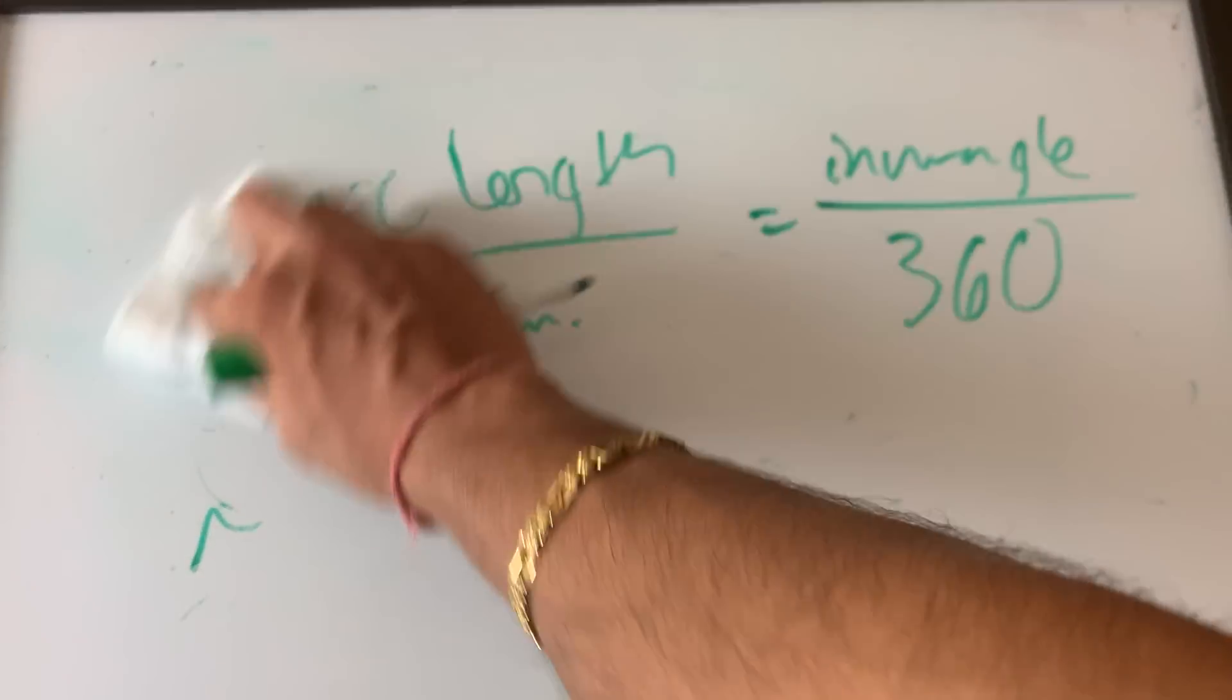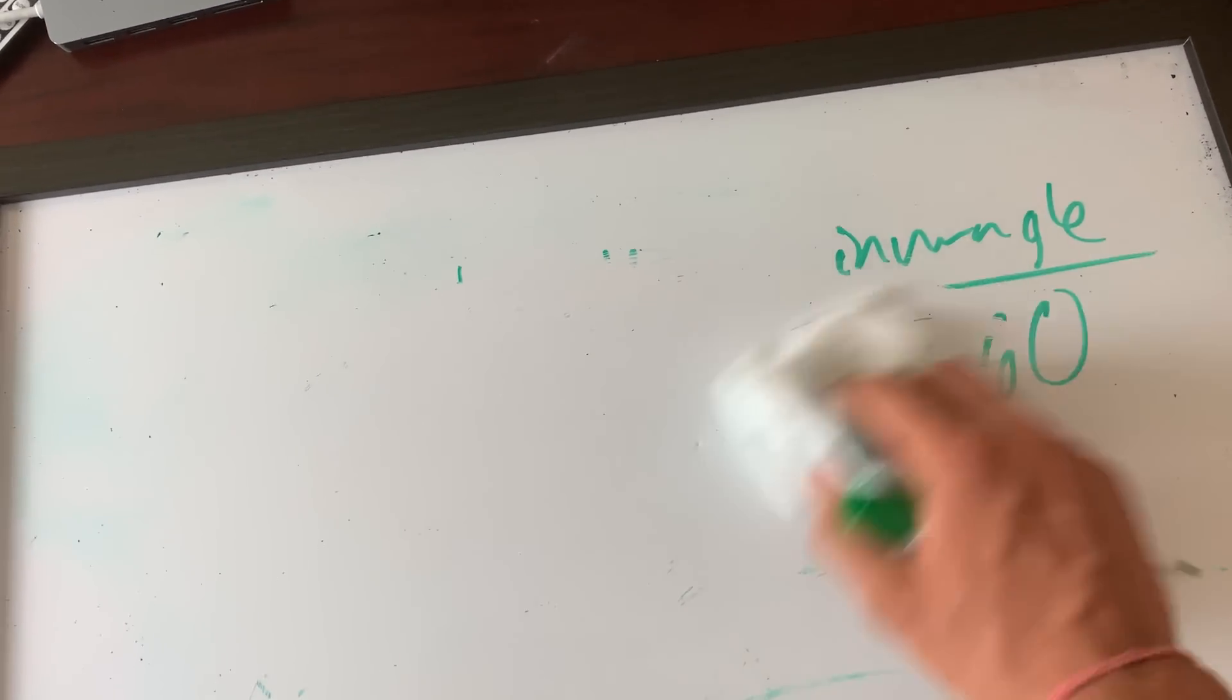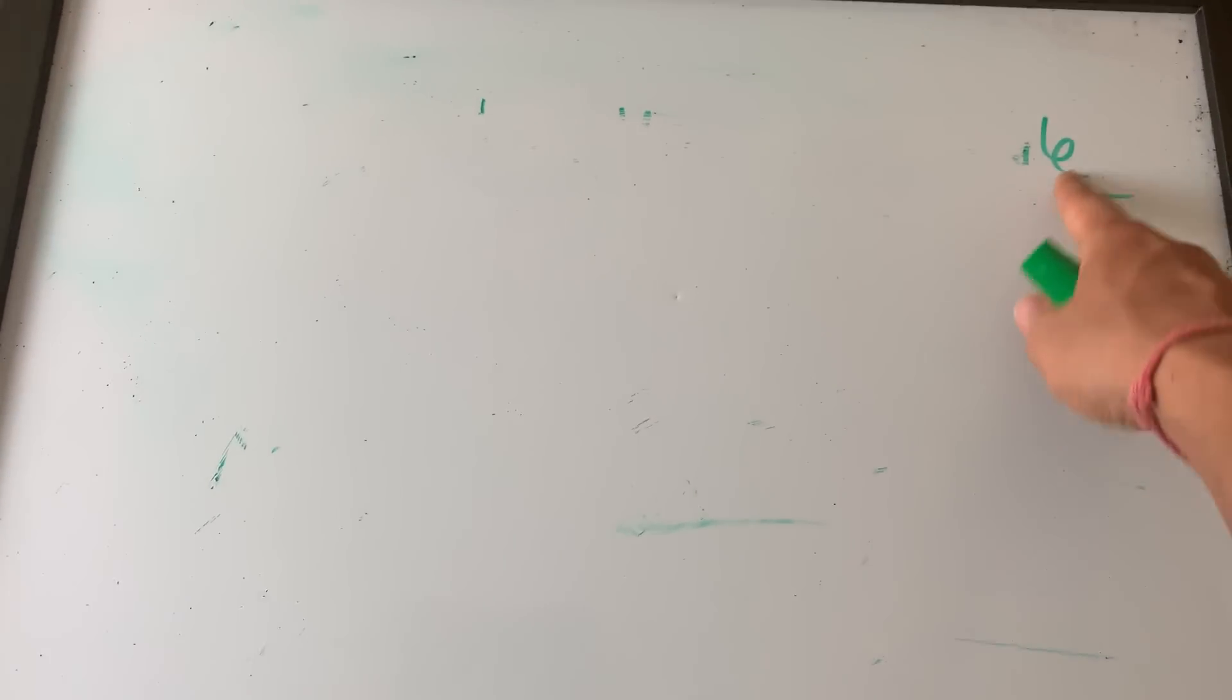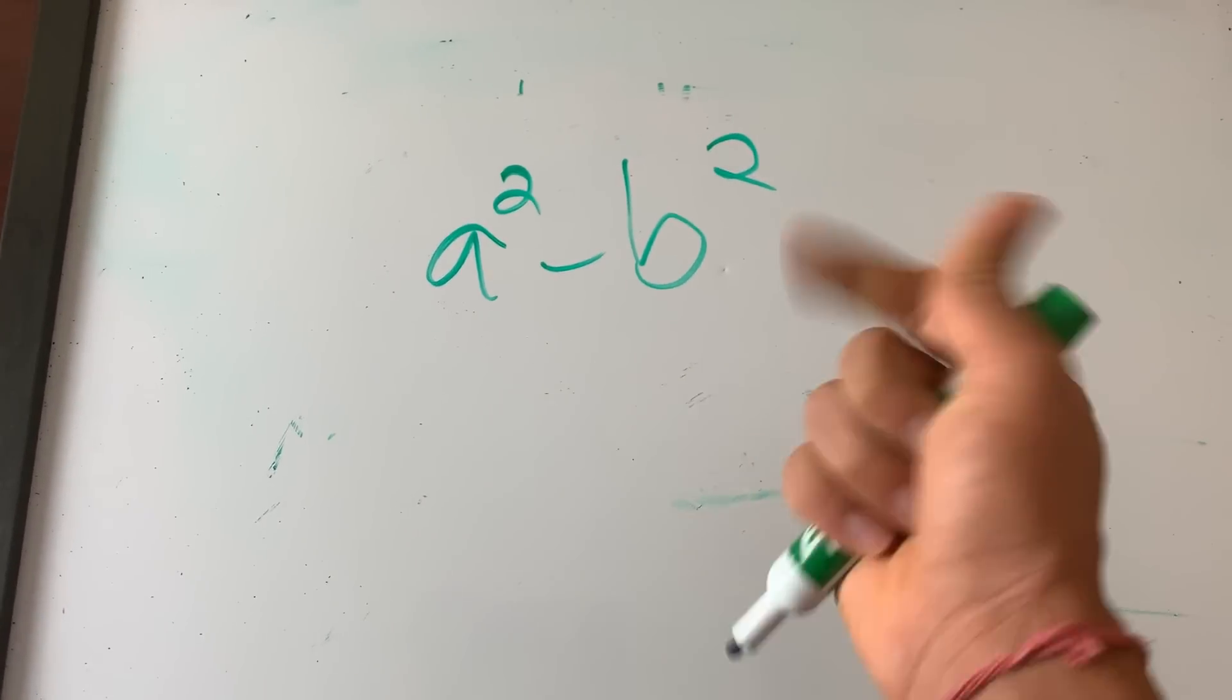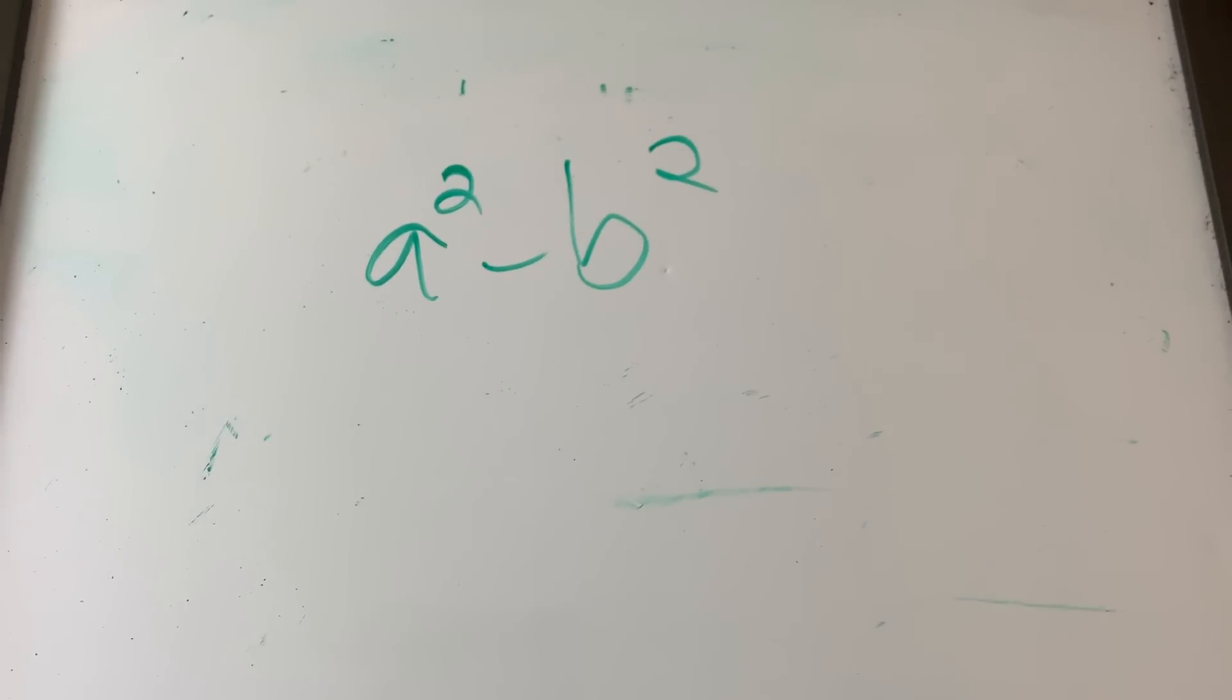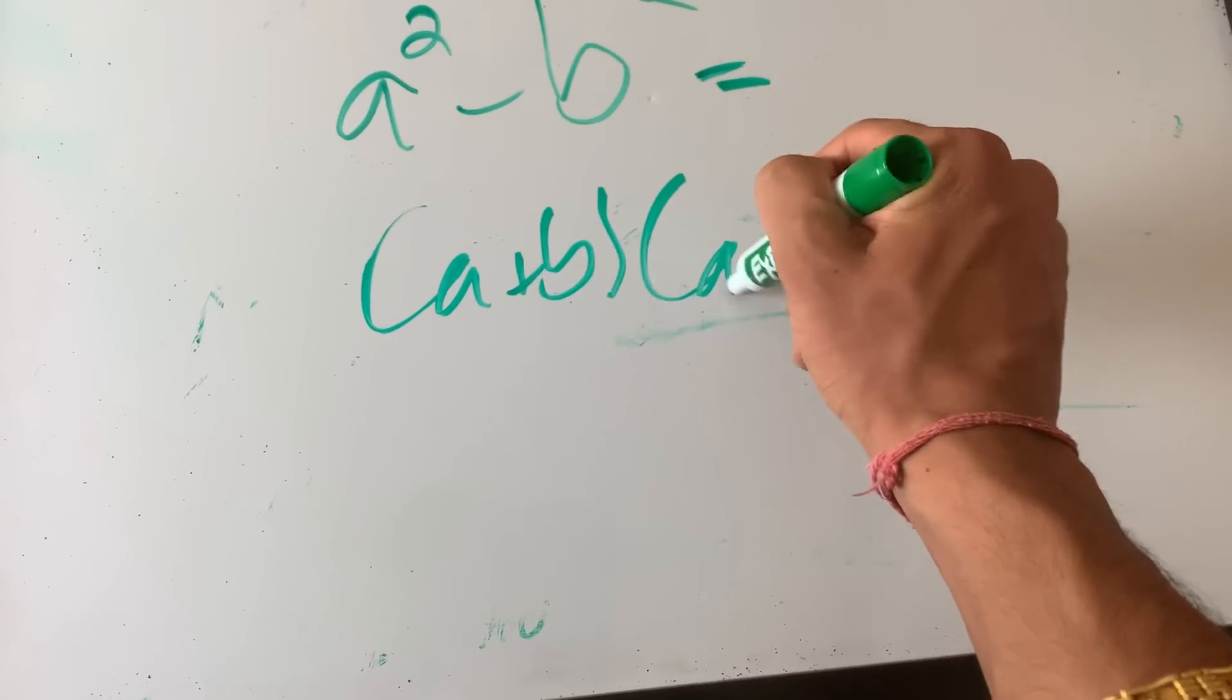One last thing guys, this is another big one. This is actually pretty easy. A lot of people just don't recognize this fast enough or they'll take too much time to recognize this, and time is everything on SAT guys. A squared minus b squared, factor this right now. Boom boom, five seconds, five four three two one. Boom. If you were not able to tell me the answer within those five seconds, you have not mastered this guys.